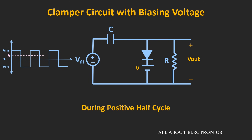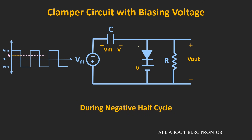During the positive half cycle, this diode will act as a short circuit because this voltage Vm is greater than V volts. During the positive half cycle, this capacitor will start charging through this path, and if you apply KVL, then the voltage across this capacitor will be equal to Vm minus V volts. During this positive half cycle, the output voltage will be equal to V volts. Now during the negative half cycle, the voltage at the anode of this diode will be equal to minus 2Vm plus V volts — meaning during this negative half cycle, this diode will act as an open circuit. During this negative half cycle, the output voltage Vout will be equal to minus 2Vm plus V volts.